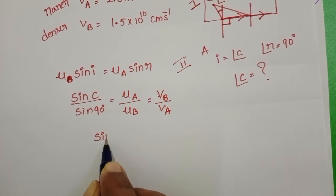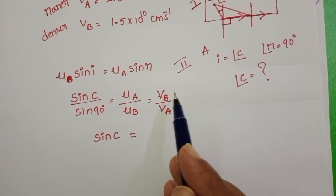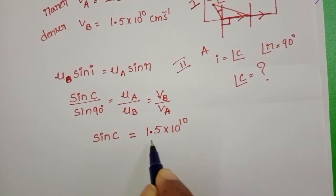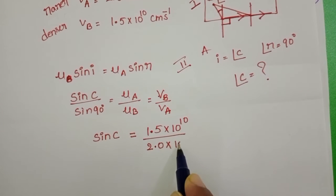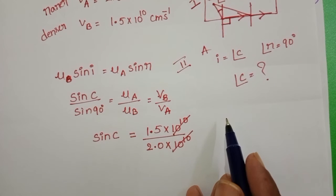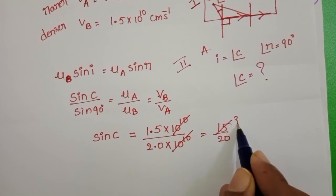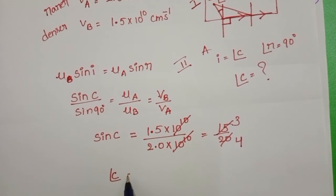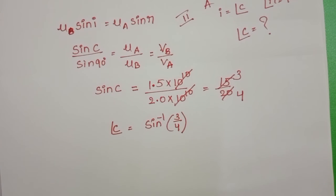Since sine(90°) = 1, sine(C) = V_B / V_A = 1.5 × 10^10 / 2.0 × 10^10. The 10^10 terms cancel out, giving 15/20, which simplifies to 3/4. Therefore, the critical angle equals sine inverse of 3/4.